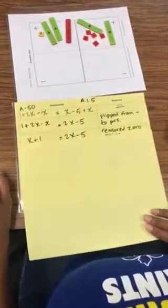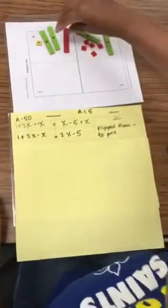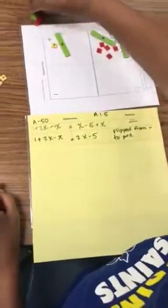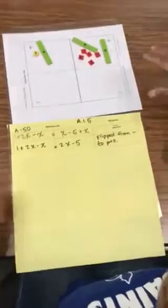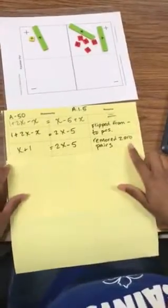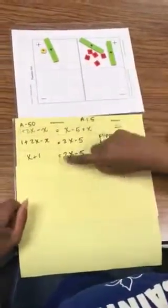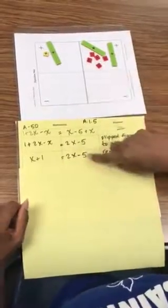Then the next step, I'm going to say I need to remove the zero pair. So I can take you away. Remove zero pair. So I'm left with x plus 1 equals 2x and that minus 5.